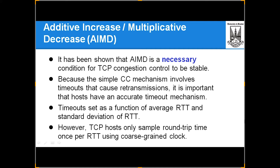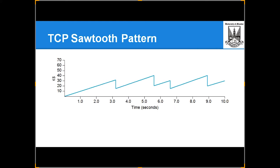The timeout is set as a function of the average RTT and the standard deviation of RTT. TCP hosts sample round trip time once per RTT using a coarse-grained clock. If you look at the pattern, it looks like a sawtooth — increasing, decreasing, increasing, decreasing.